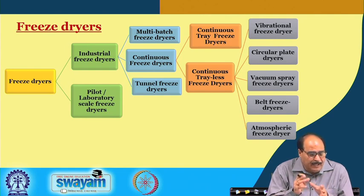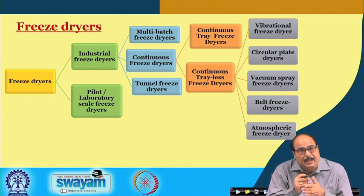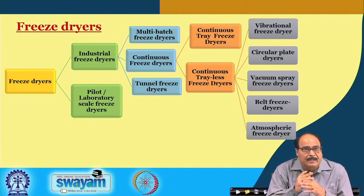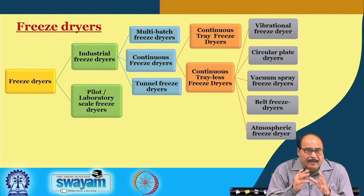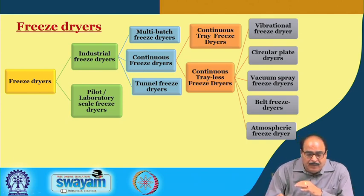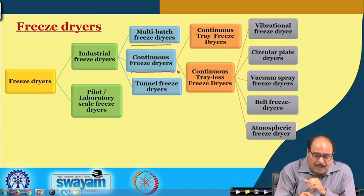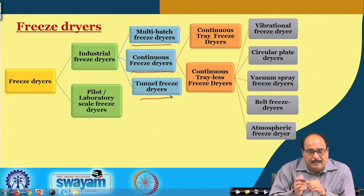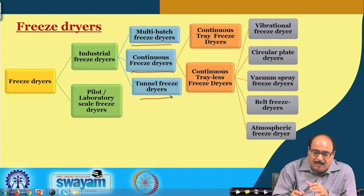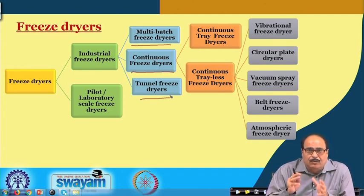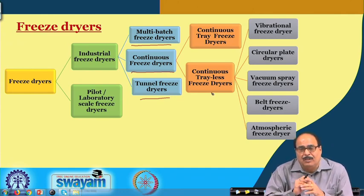Freeze drying systems may be pilot or laboratory scale, and systems are also available for industrial and large scale freeze drying. The industrial or large scale freeze dryers may be of multi-batch type, continuous freeze dryer, or tunnel freeze dryers. The continuous freeze dryers can be classified into two groups: continuous tray freeze dryer or continuous trayless freeze dryer.